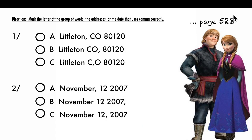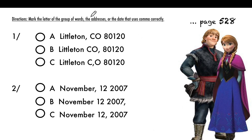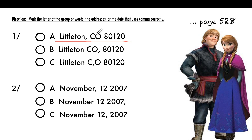Let's go to the next page, page 528. Mark the letter of the group of words — the addresses or the dates — that use commas correctly. We have the address: Littleton, Colorado, 80120. This is the city, this is the state, and this is the zip code. The correct answer places the comma after the city, between the city and the state: Littleton, Colorado. Mark the answer.